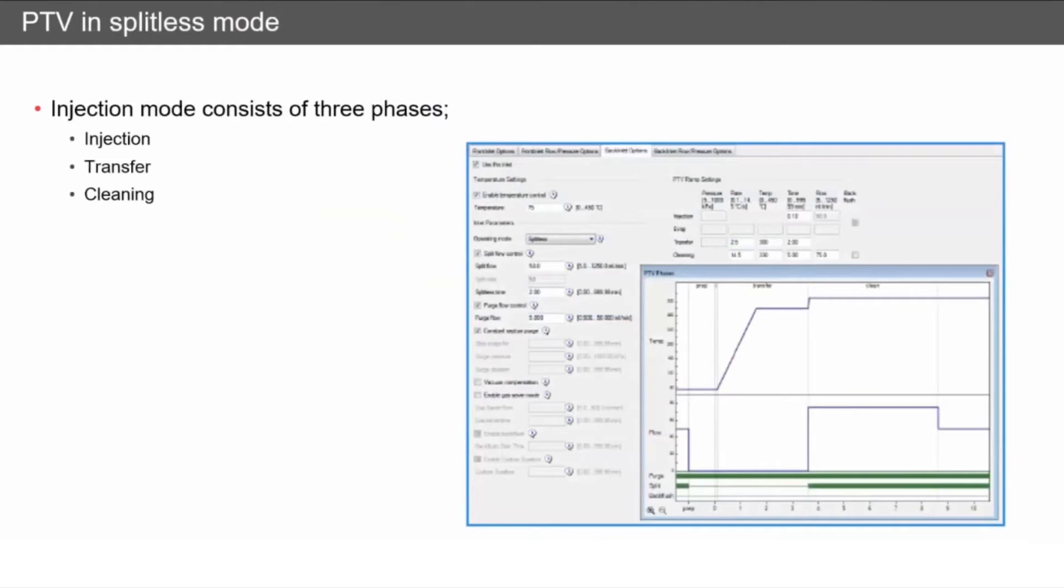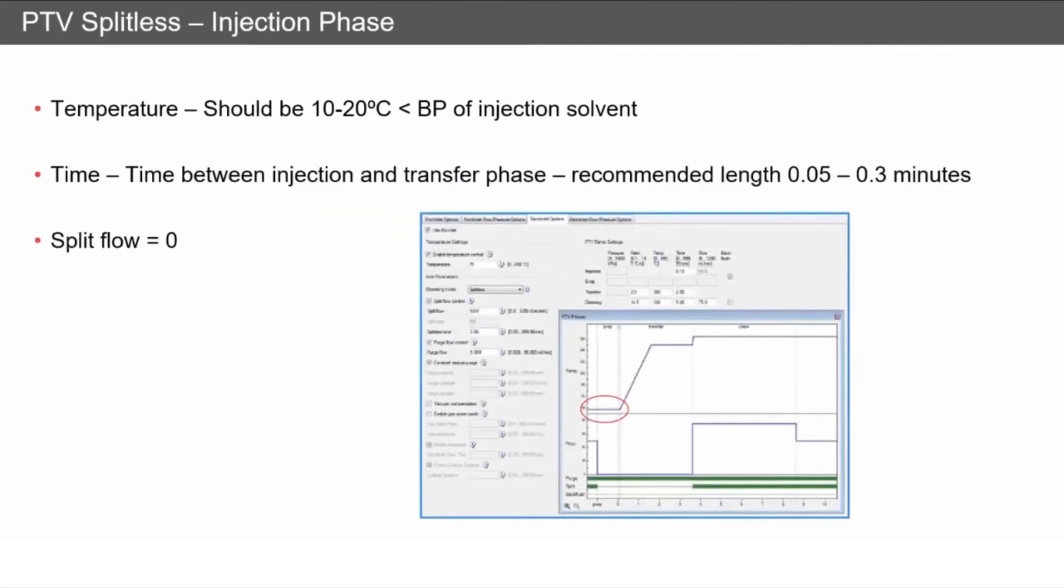In the injection phase, this is when the injection is made. We set the temperature to be 10 to 20 degrees less than the boiling point of the solvent. The reason for this is we don't want the solvent to evaporate as it goes in. The time is going to be short, 0.05 to around 0.3 minutes, and there's no split flow, so all the flow is traveling down onto the separation column.